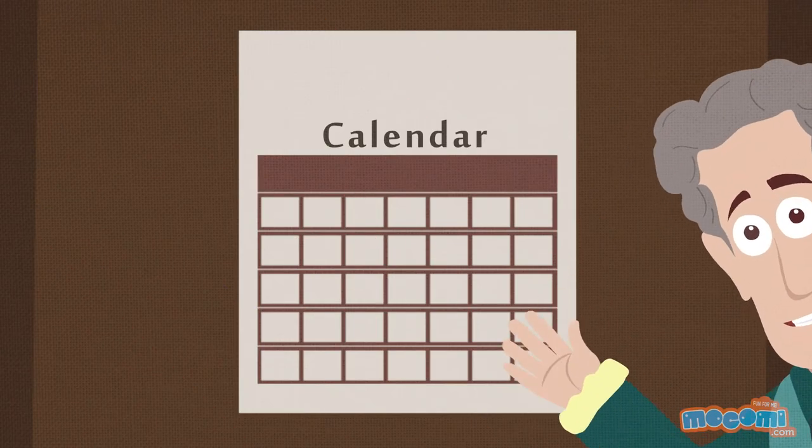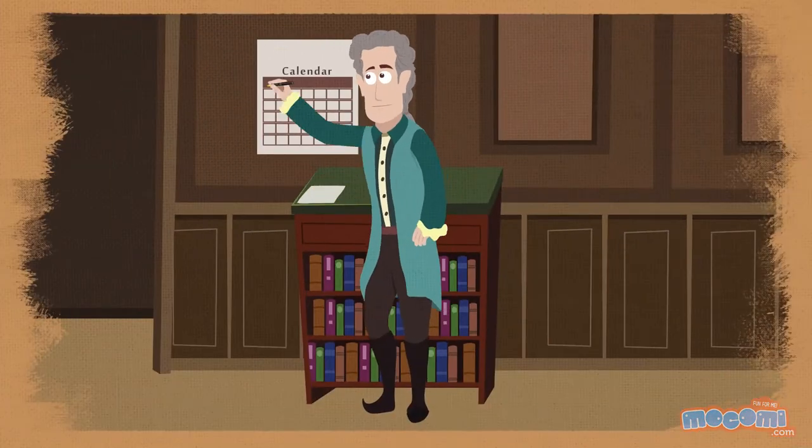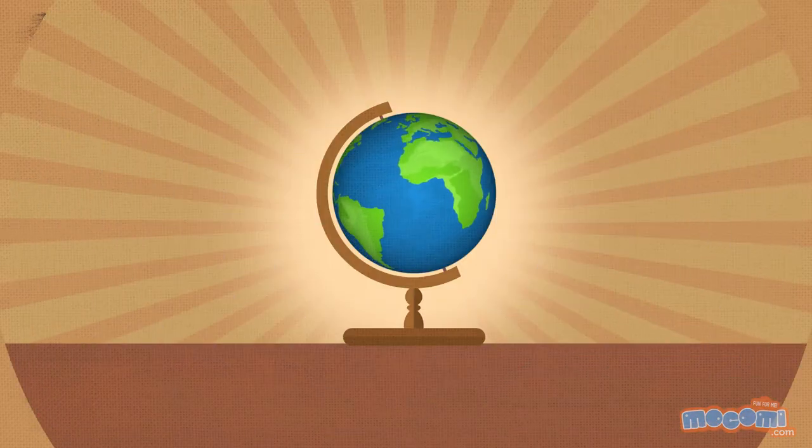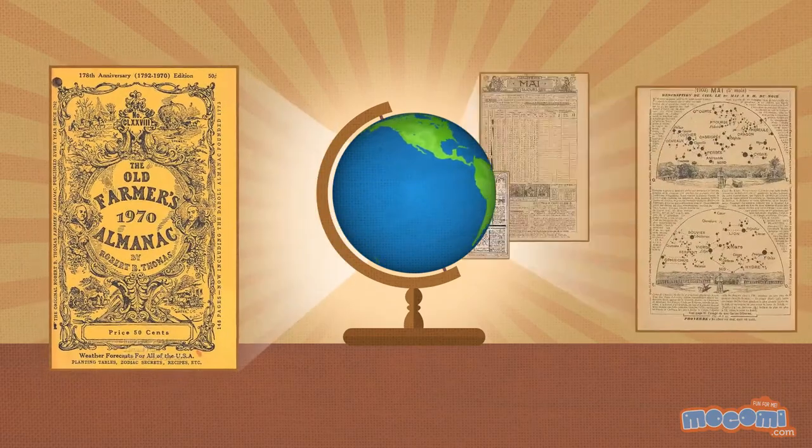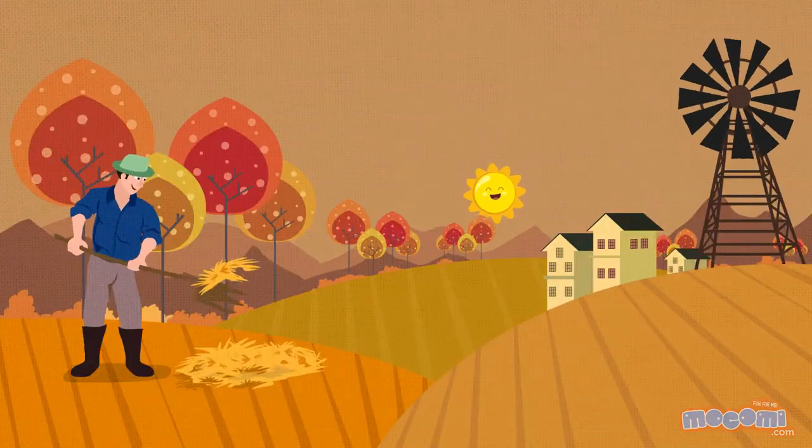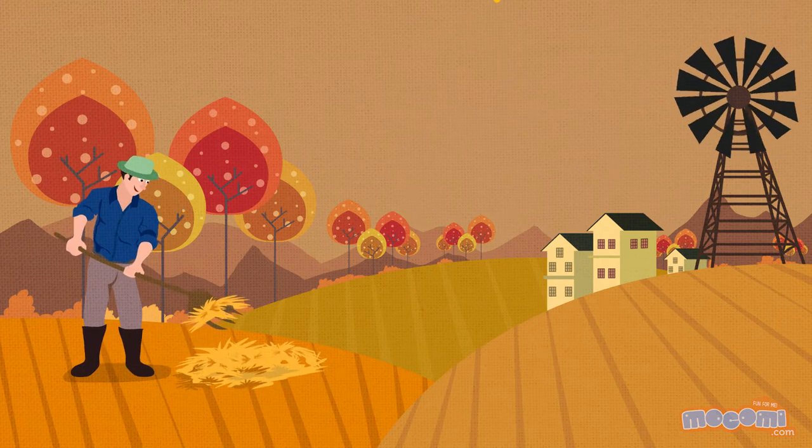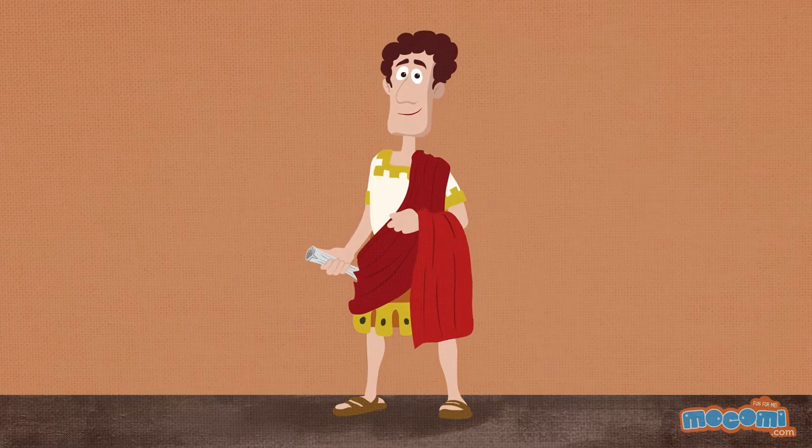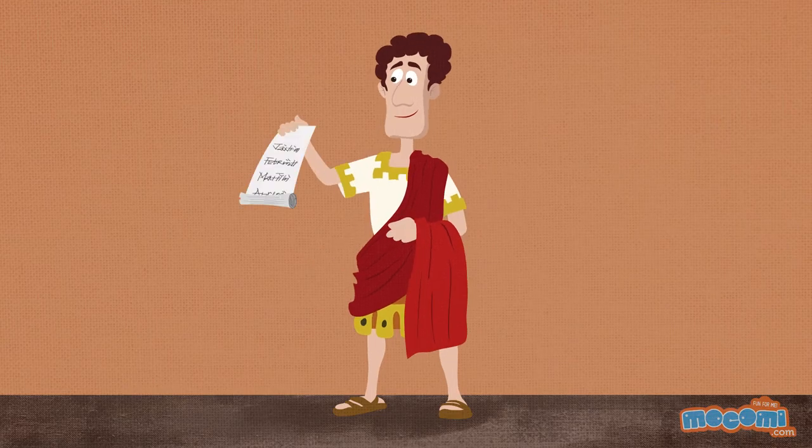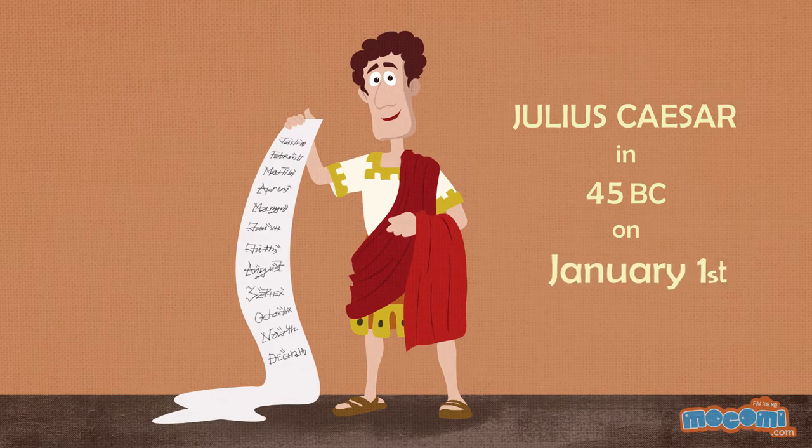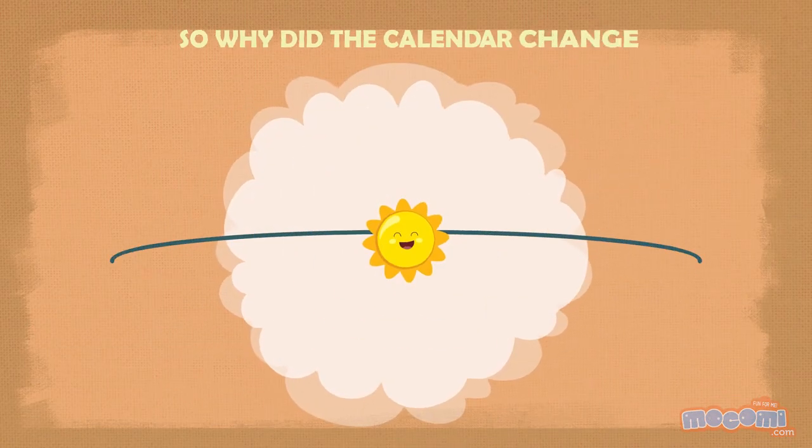People across the world follow the Gregorian calendar. The world converted to the Gregorian calendar in 1752. Otherwise, different people around the world follow different calendars. In fact, people who do agriculture and farming still use a combination of solar and lunar calendars. The 12 months in the calendar as we know them today were first introduced by Julius Caesar in the year 45 BC on January 1st.